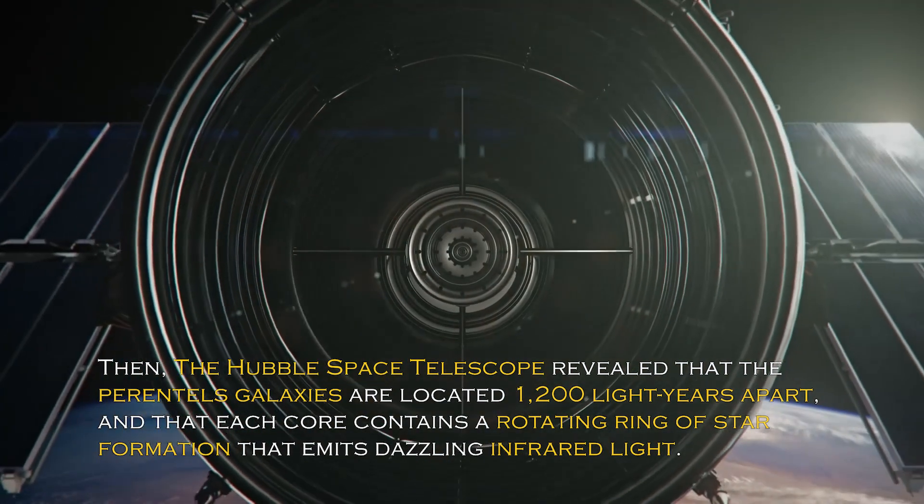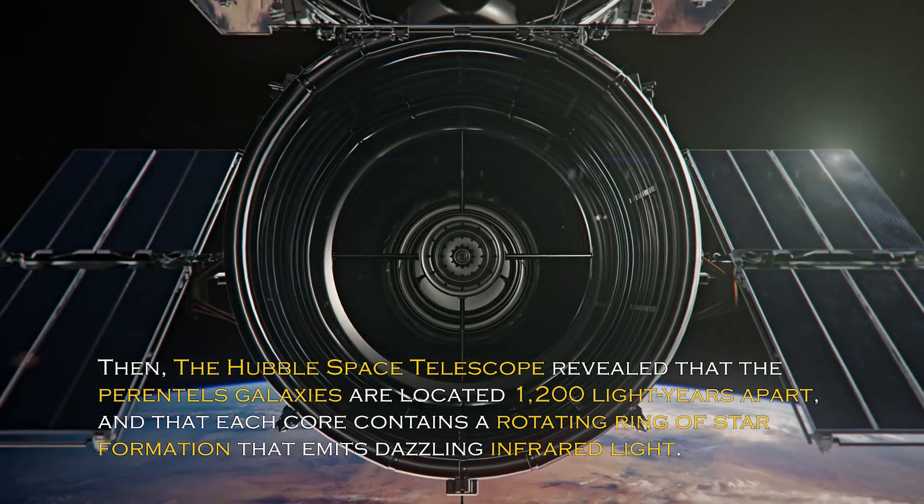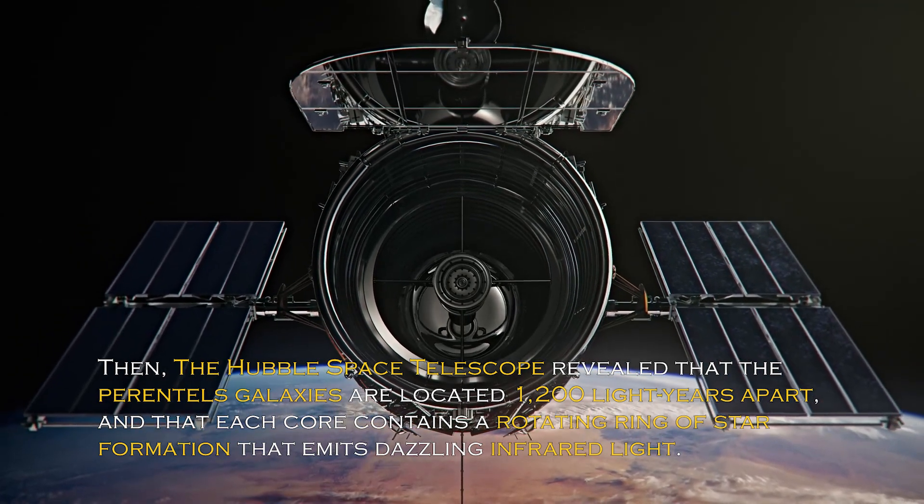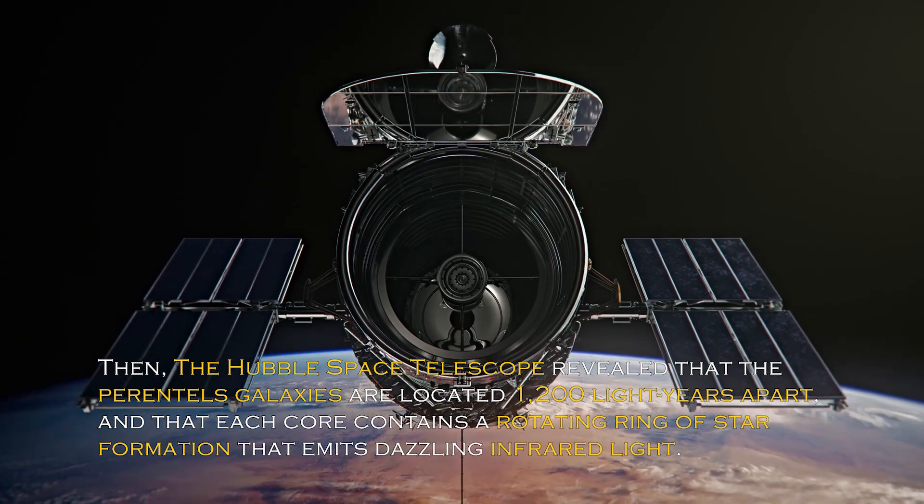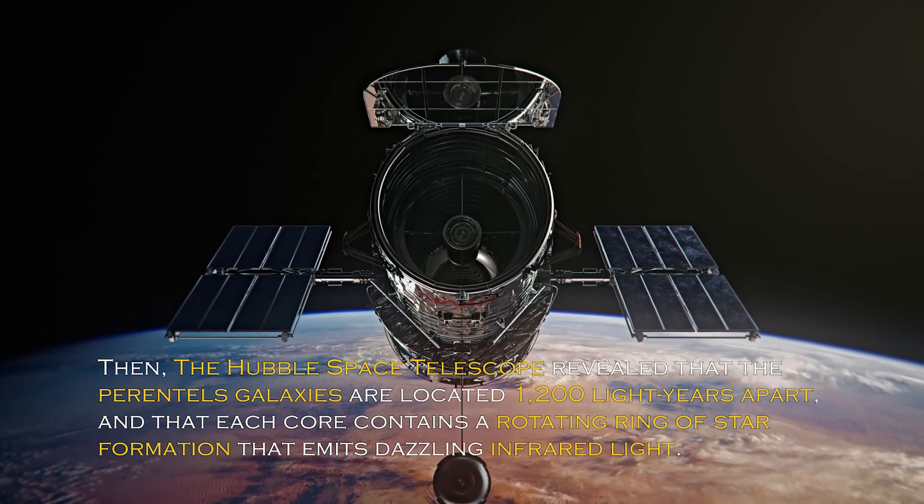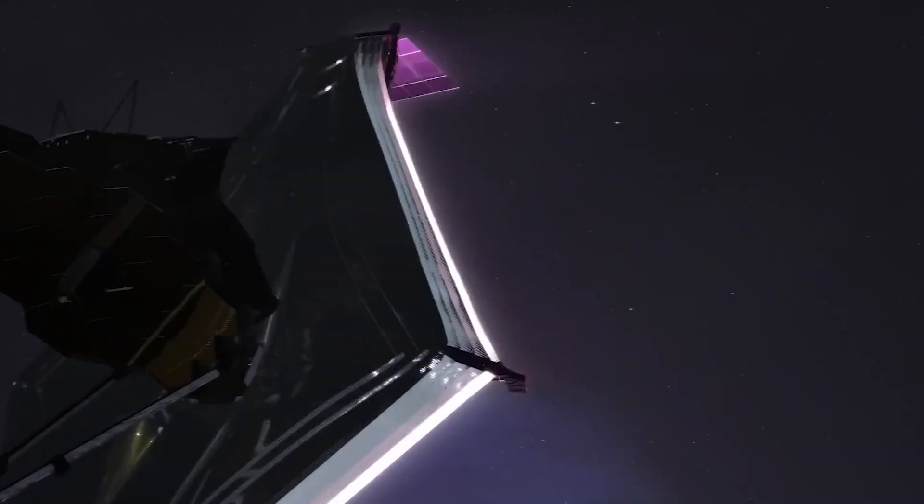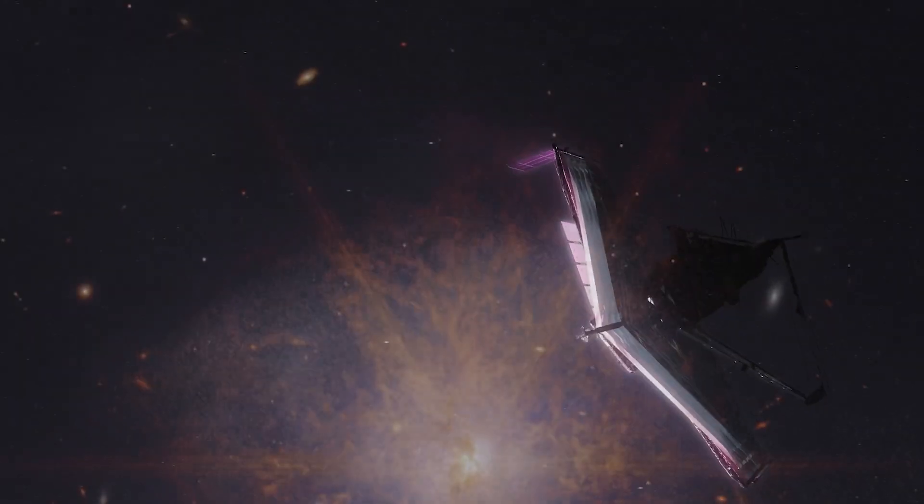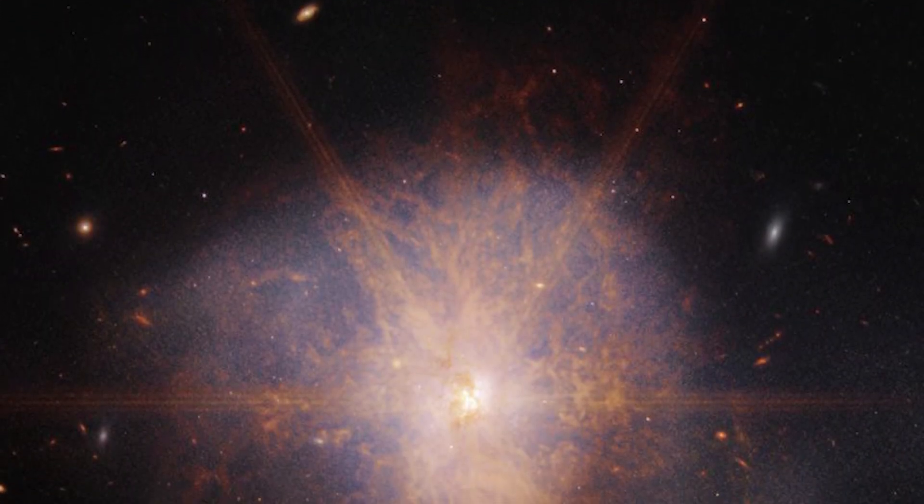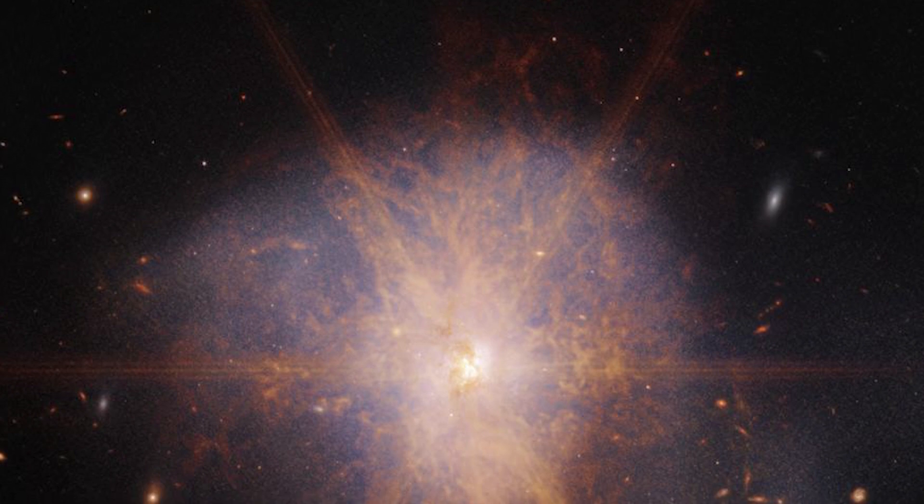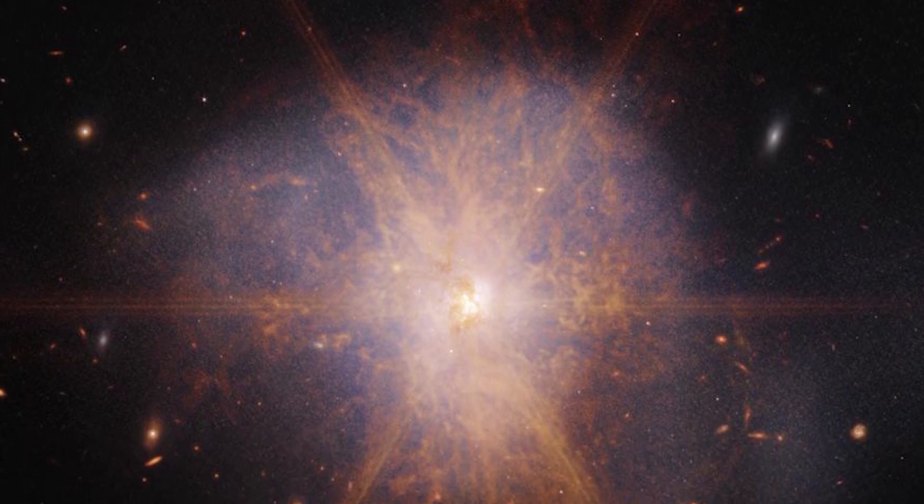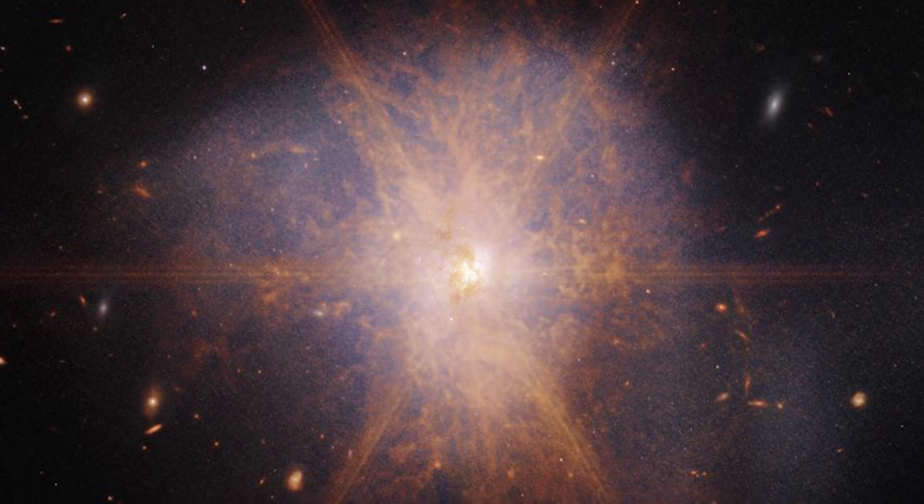Then the Hubble Space Telescope revealed that the parent galaxies are located 1,200 light-years apart, and that each core contains a rotating ring of star formation that emits dazzling infrared light. The latest views from the James Webb Space Telescope show an impressive galactic merger of the two galaxies. This image also shows faint tidal tails extending from the outskirts of the merger, indicating the gravitational pull between the two galaxies.